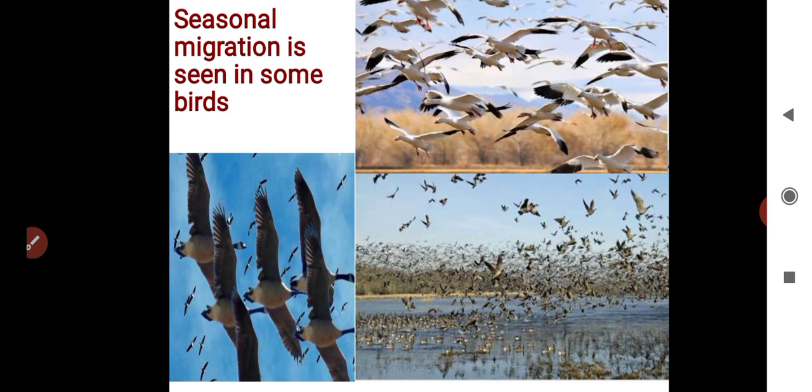Seasonal migration is seen in birds. Birds leave their own habitat and move to another region — from one hemisphere to another hemisphere, or from one country to another country — for suitable conditions and for breeding.